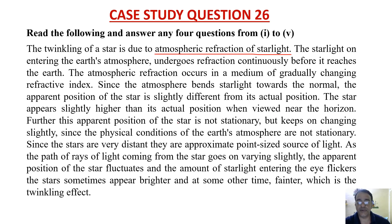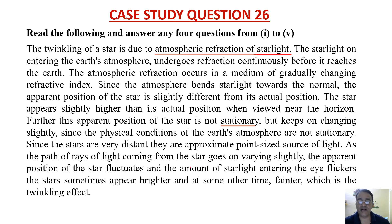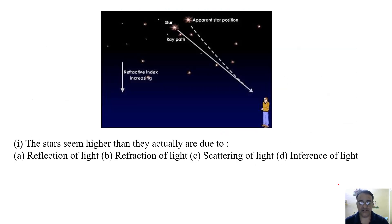The star appears slightly higher than its actual position when viewed near the horizon. Further, this apparent position of the star is not stationary but keeps on changing slightly, since the physical conditions of the earth's atmosphere are not stationary. Since the stars are very distant, they are approximate point-sized sources of light. As the path of rays of light coming from the star varies slightly, the apparent position fluctuates and the amount of starlight entering the eye flickers — stars appear brighter at some times and fainter at others, which is the twinkling effect.